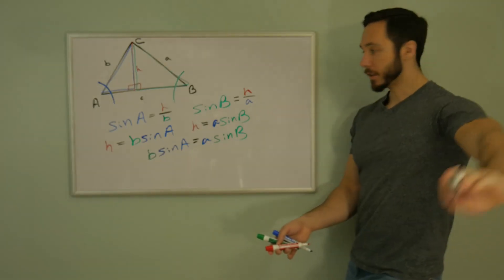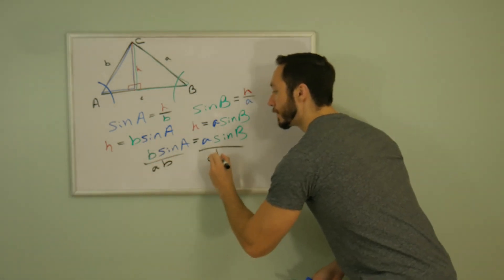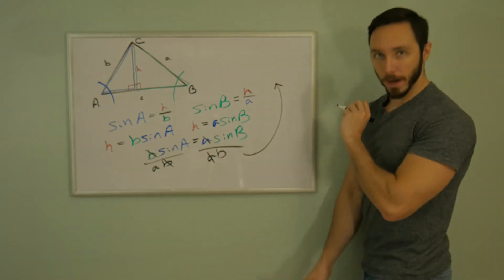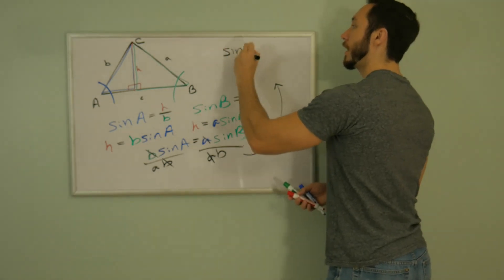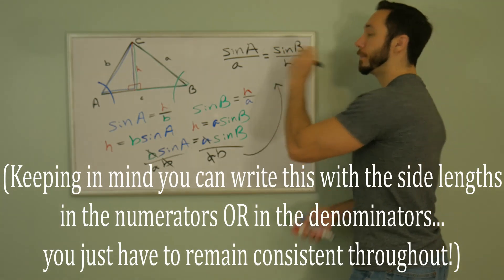Lastly, let's finish this off by dividing both sides by little a and little b. Little b's cancel, little a's cancel, bringing us to a final statement of sine of angle A over little a is equal to sine of big B over little b.